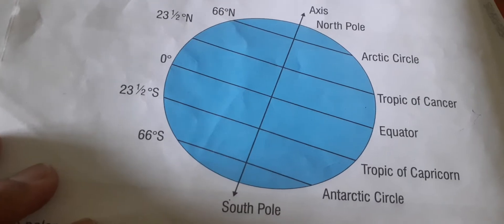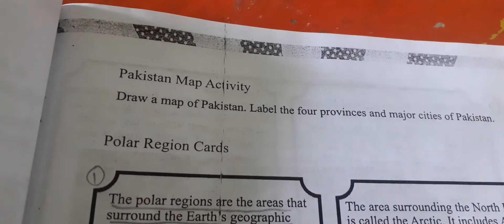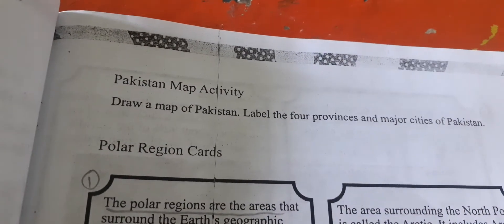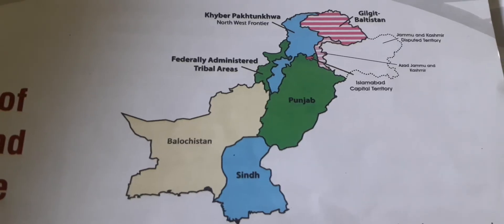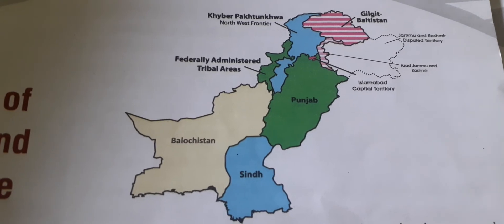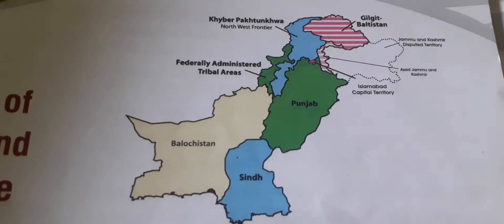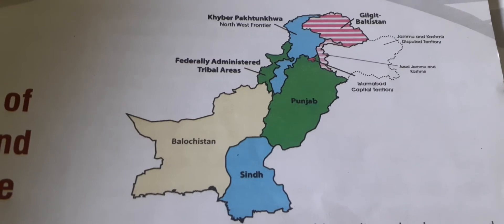Just like this diagram. Now come to the next point: Pakistan Map Activity. Draw a map of Pakistan. Label the four provinces and major cities of Pakistan. Just like this map, you draw the map of Pakistan on your notebook and label its province's name.